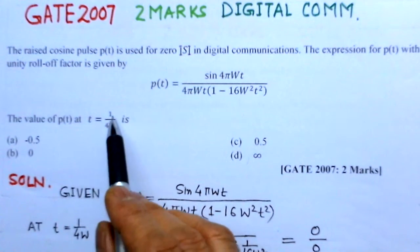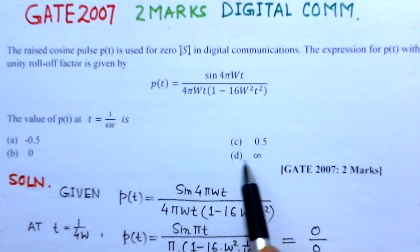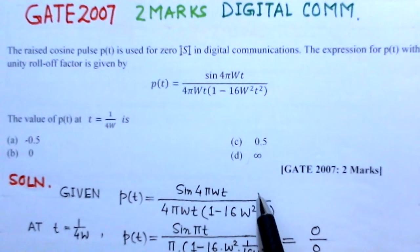The value of P(t) at t equals 1 by 4W is, and these are the four options here, and we have to find which is the right option.